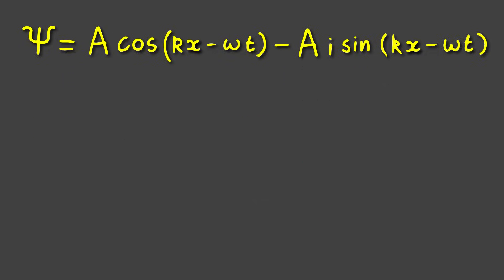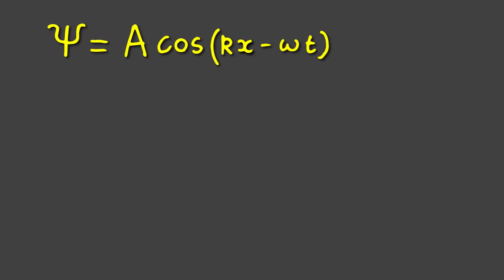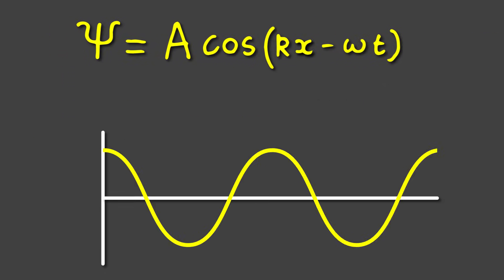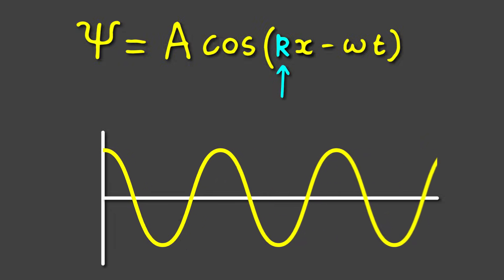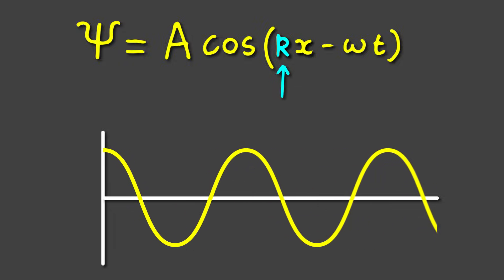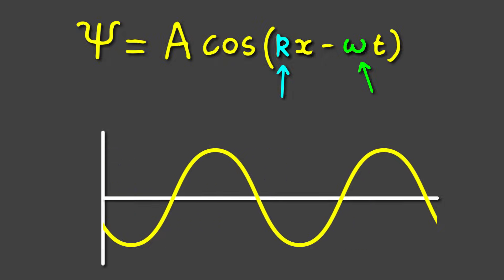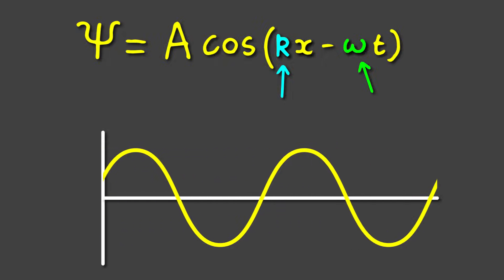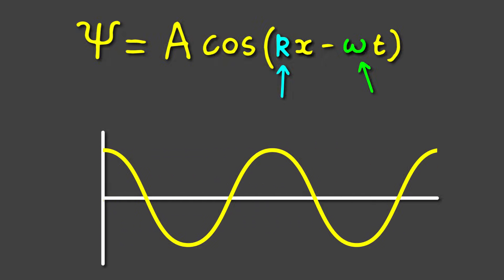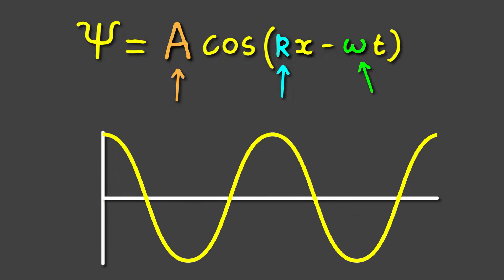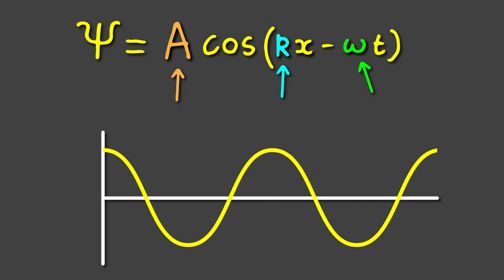We'll just plot the first part of this wave function to begin with. This is simply a cosine wave. Note that k is a variable controlling the size of the wavelength, omega controls the oscillation frequency, and the pre-factor a controls the amplitude. So different parameters will make different waves.